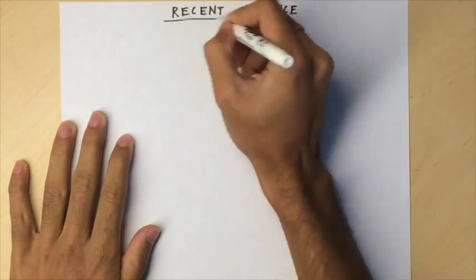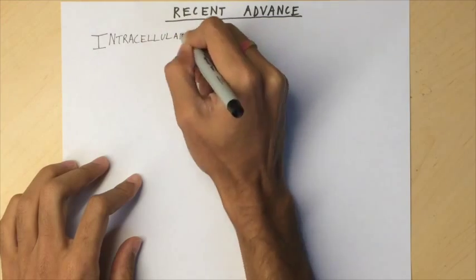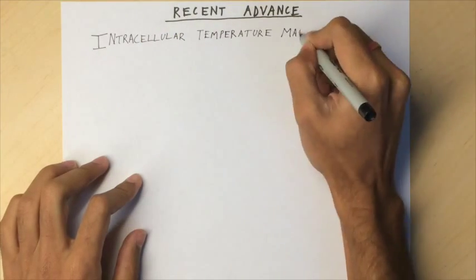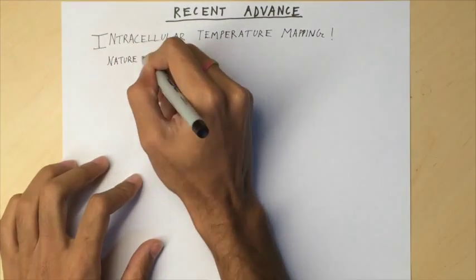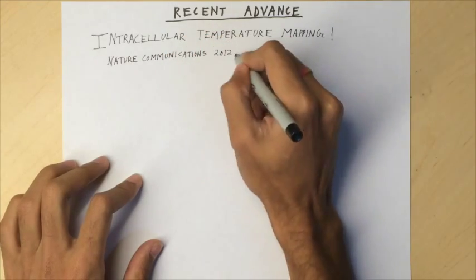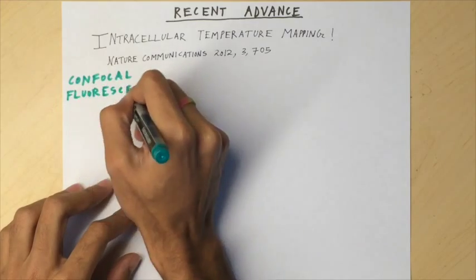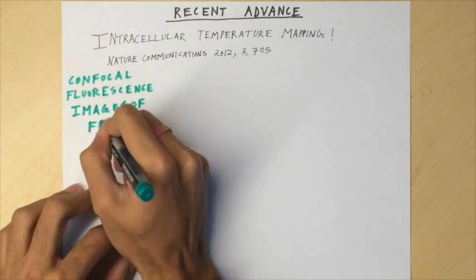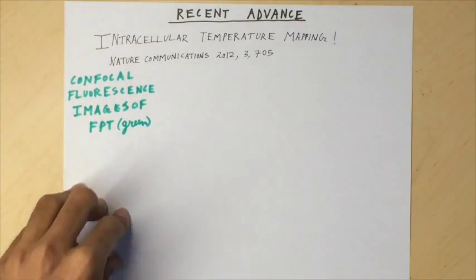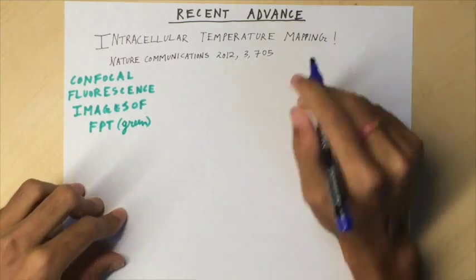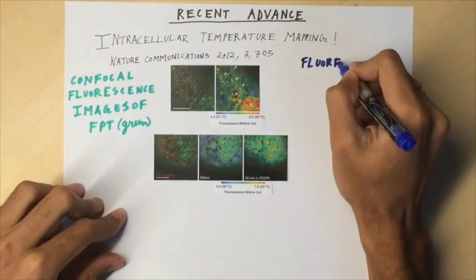A recent breakthrough made possible by FLIM has been intracellular temperature mapping, which is published in Nature Communications by Okabe, Inada, et al. in 2012. The scientists have demonstrated intracellular temperature mapping for the first time based on a fluorescence polymeric thermometer or FPT, using FLIM.